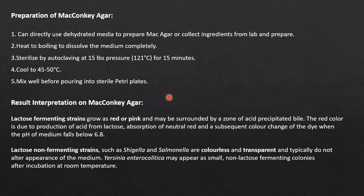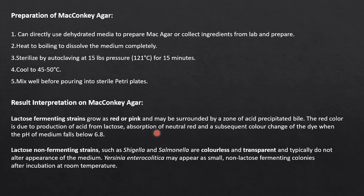Once cultures are inoculated and incubated, interpret results as follows: a lactose fermenting strain should grow as red or pink colonies, and may show a zone of acid-precipitated bile surrounding the colony. The red color is due to acid production from lactose fermentation and the absorption of neutral red, which shifts from colorless to red as the pH falls below 6.8.